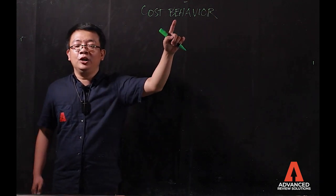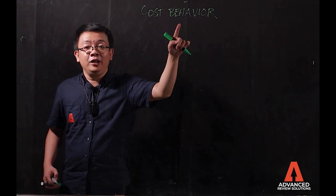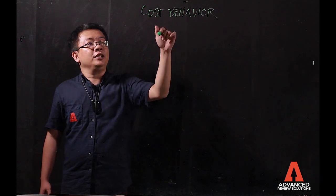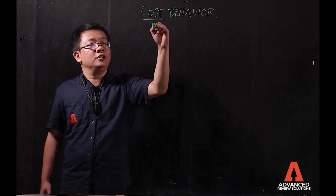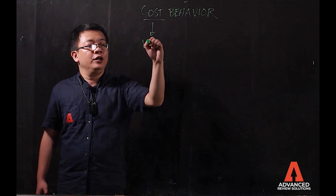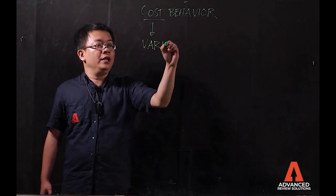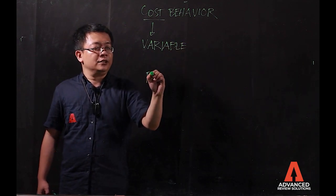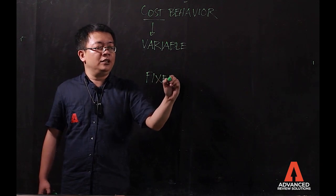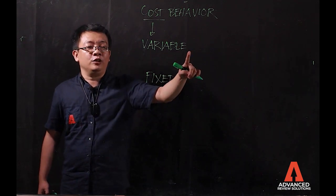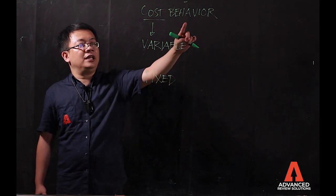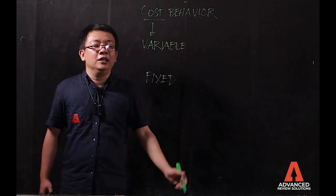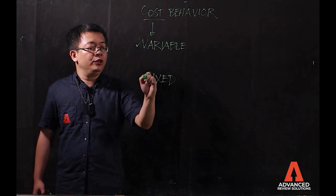Very important is how the changes in your cost react in terms of your level or changes in your sales. Cost behavior is basically how specific the cost responds to changes in the level of your activity. That's why you have your variable and you have your fixed cost.